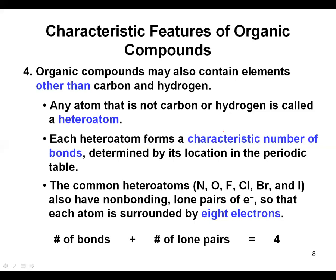Any atom that is not carbon or hydrogen is sometimes called a heteroatom. Common heteroatoms include nitrogen, oxygen, fluorine, chlorine, bromine, and iodine. These are common replacements for hydrogen in organic molecules. They also have some non-bonding electrons and will generally satisfy the octet rule.